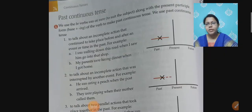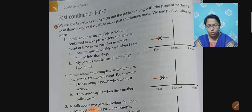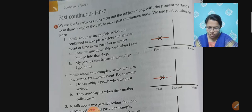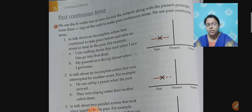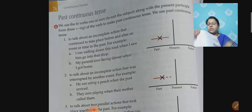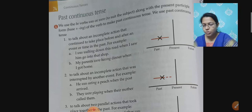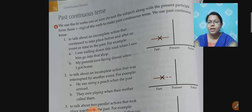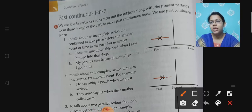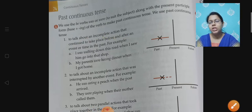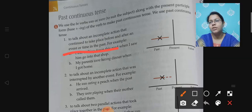Students, that was about past continuous tense from your course book. Your grammar textbook is Adventures with Grammar and Composition — chapter number 11, Continuous Tenses. That also covers past continuous tense. For reference, it mentions: to talk about an incomplete action that continued to take place before and after an event or time in the past.